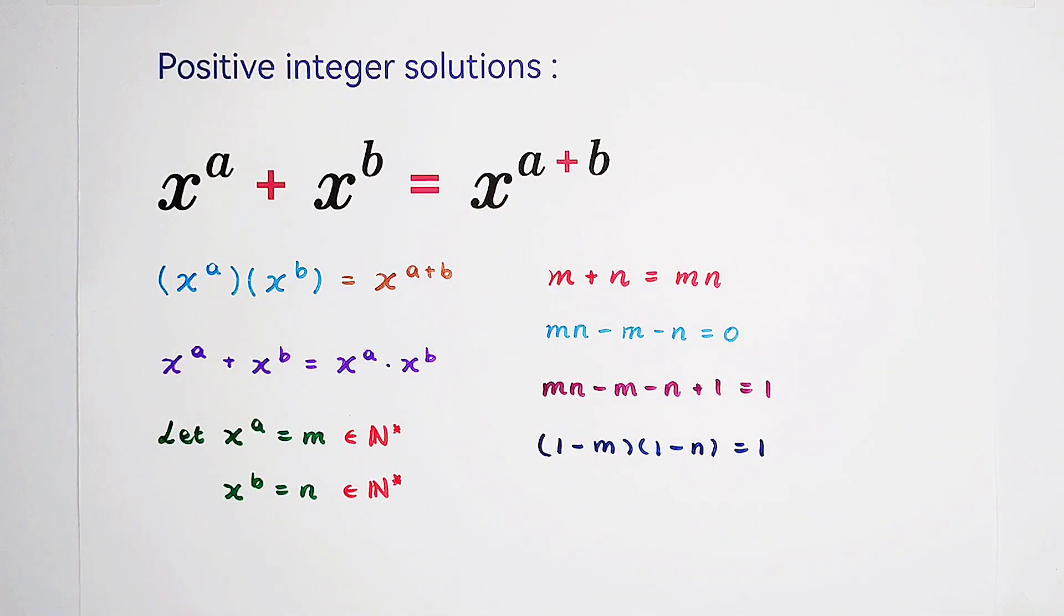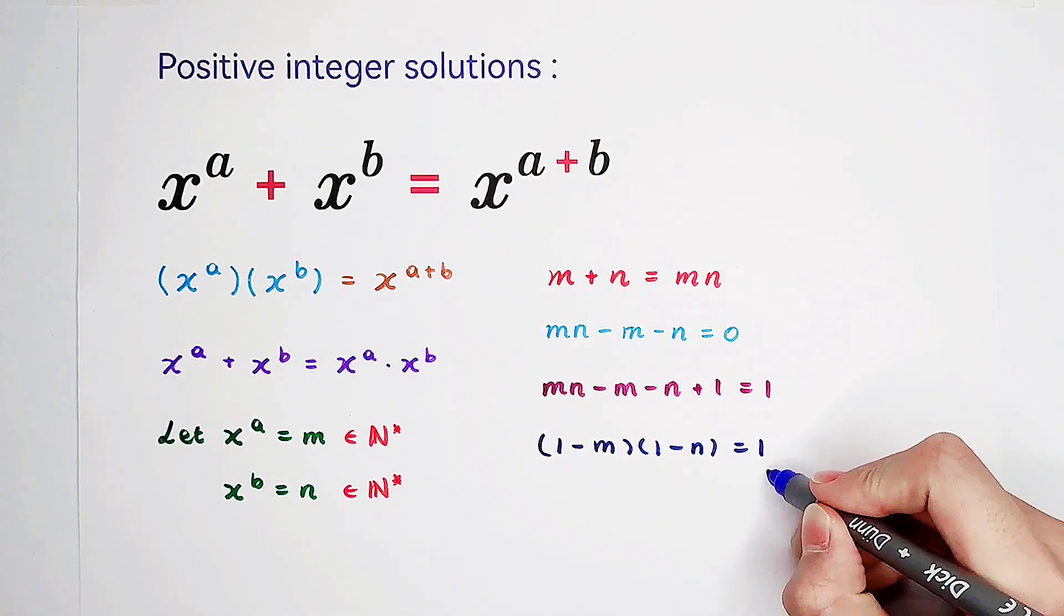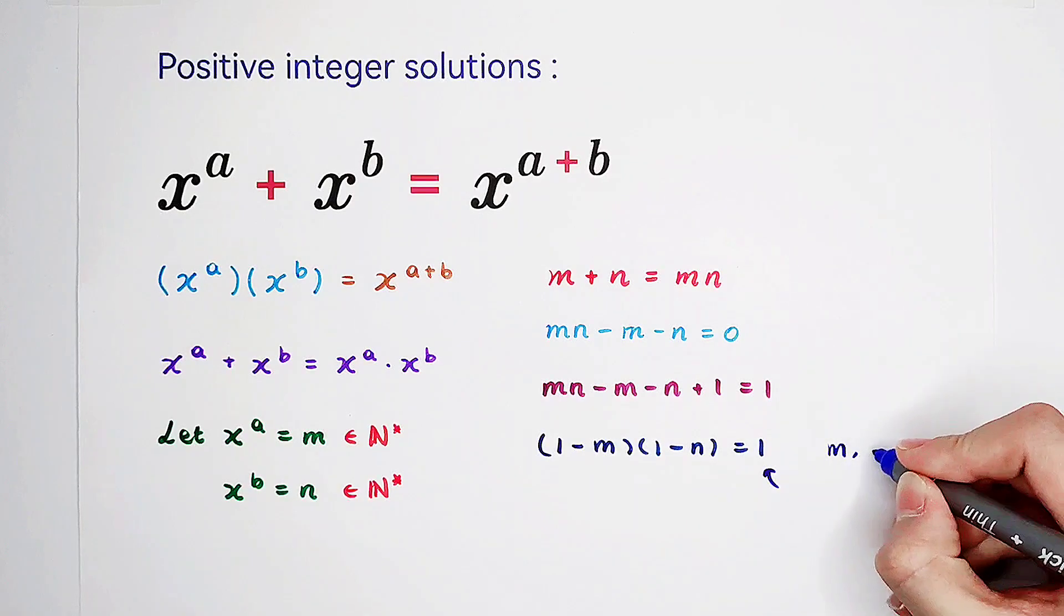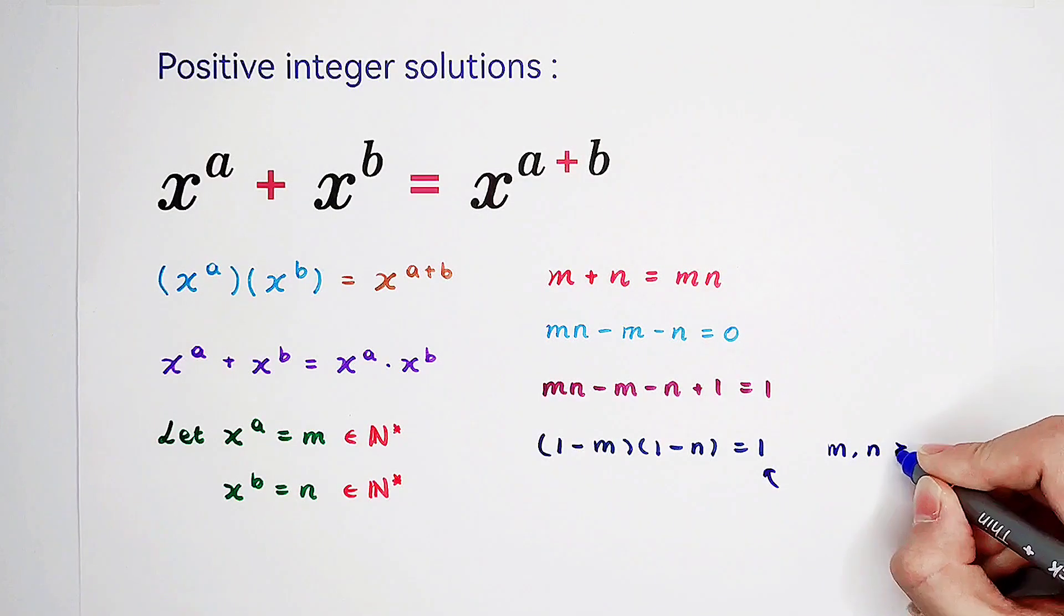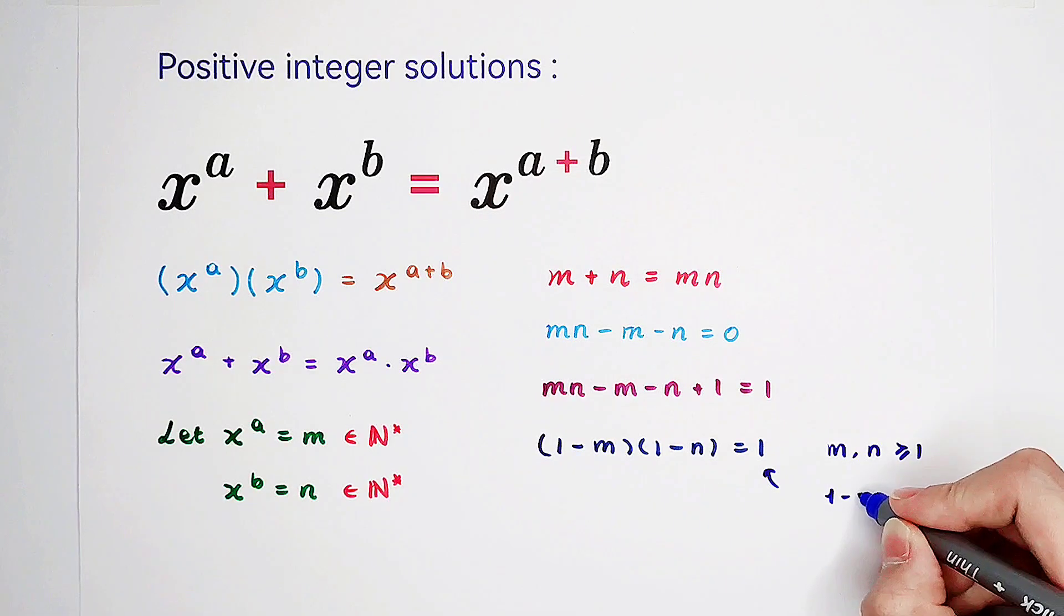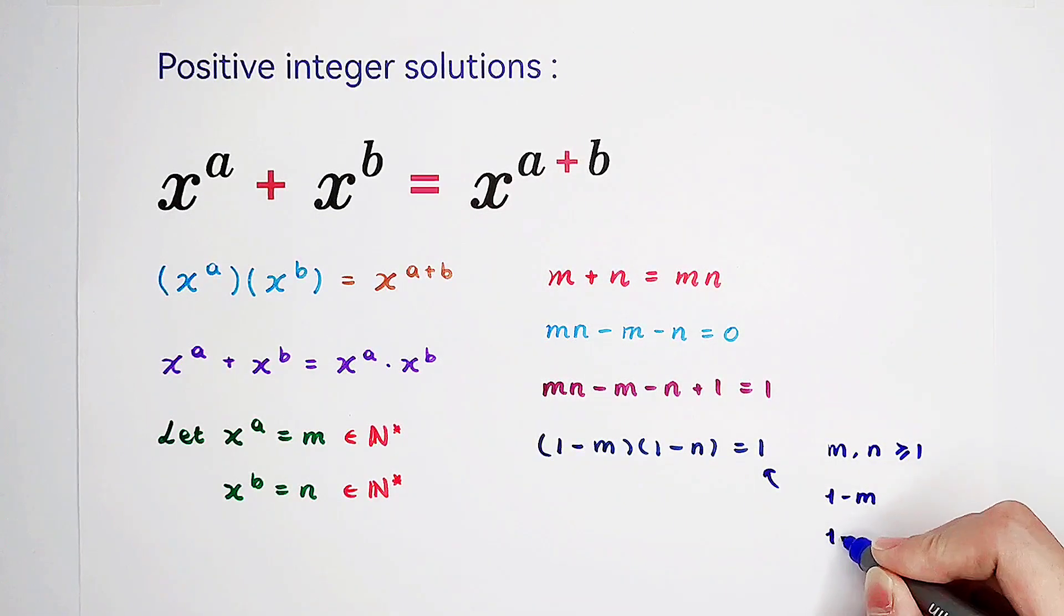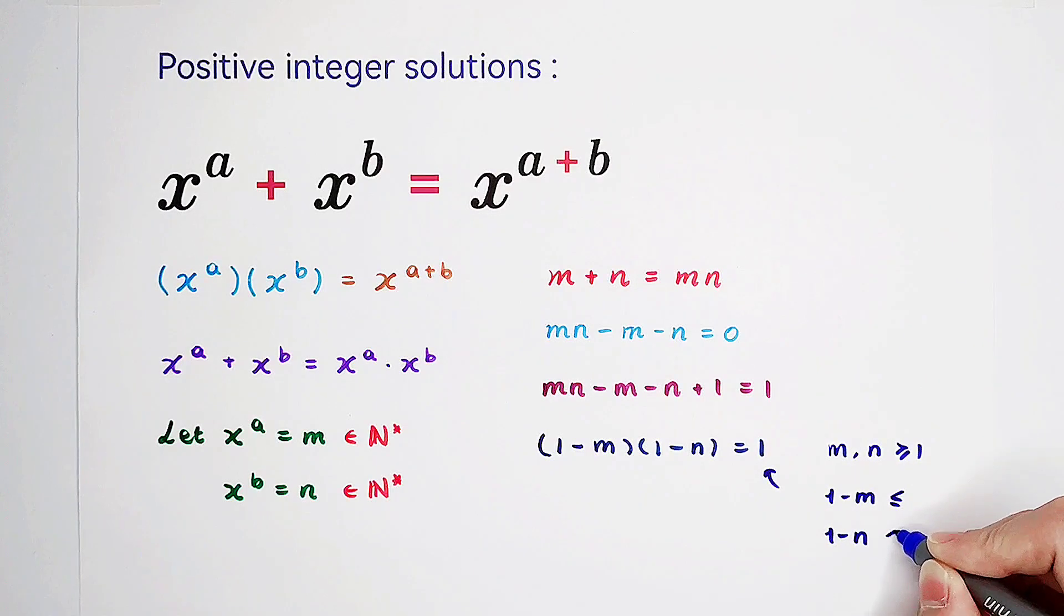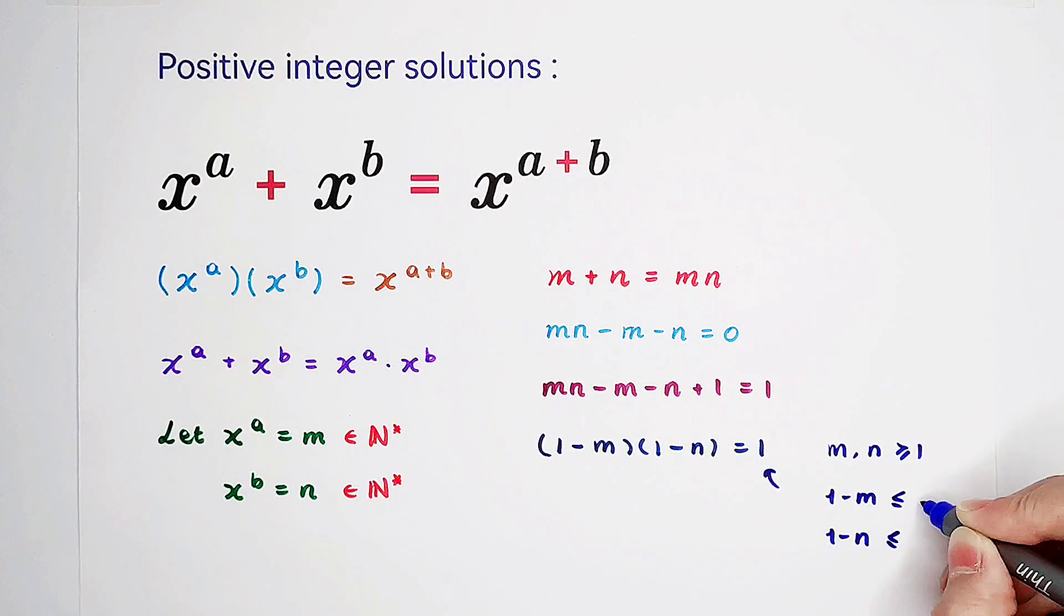So therefore, we can solve for m and n. Because we have an integer on the right-hand side and a factorization on the left-hand side. Since m and n are greater than or equal to 1, so 1 minus m and 1 minus n both of them have to be less than or equal to 0.